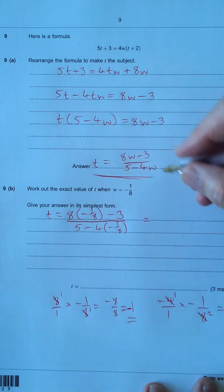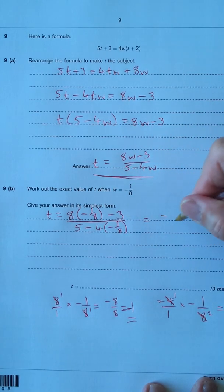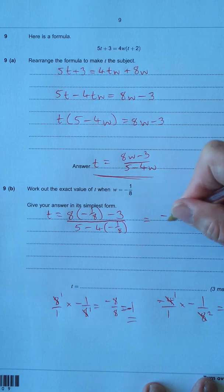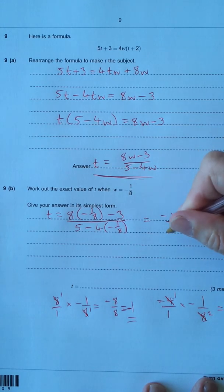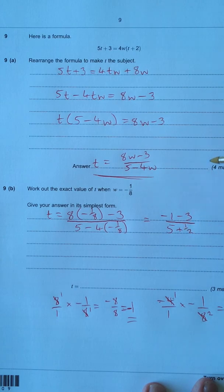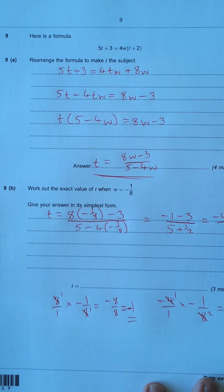So let's put that back in. So it's going to be minus 1 minus 3 over 5 plus a half. So we've got minus 1 minus 3 is minus 4 over 5 plus a half is 5 and a half.